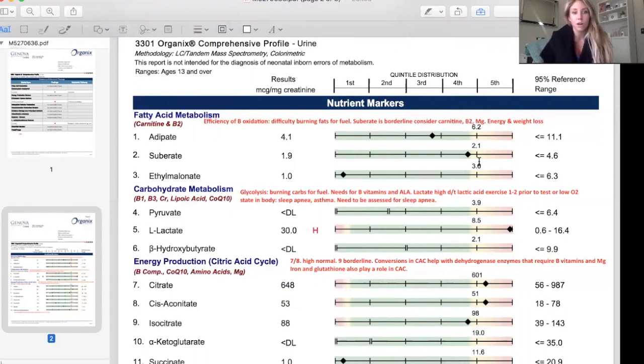Her carbohydrate metabolism, so this is glycolysis, this is how efficiently you're burning carbohydrates for fuel. We see here this trend of elevated L-lactate - we need B vitamins as well as alpha-lipoic acid to process carbohydrates for fuel. L-lactate can also be elevated if you're doing a lot of anaerobic exercise one to two days prior to testing. This was not the case for this patient. L-lactate can be elevated in conditions with low oxygen status in the body, so we want to look at sleep apnea, asthma. One of the things that did come up in the patient history is shortness of breath as well as difficulty sleeping, so my recommendation would be assessed for sleep apnea using a sleep study.